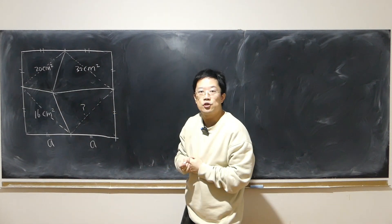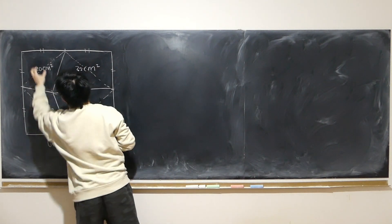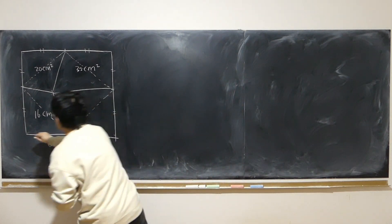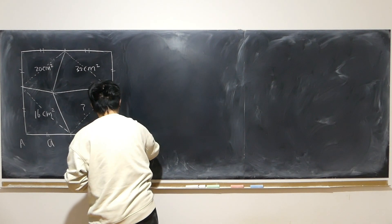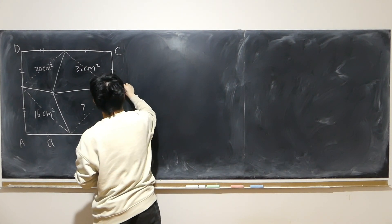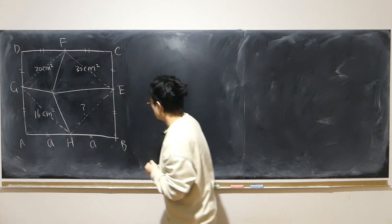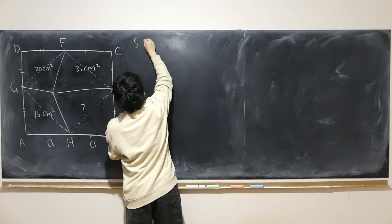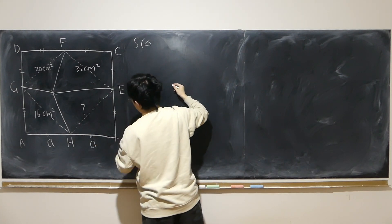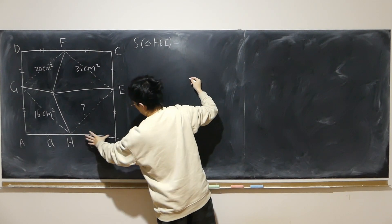The area of each small triangle — this small triangle, which is the same as this small triangle, this small triangle, and this small triangle — they should all be equal to each other. The area of triangle H-B-E equals half of A times A, that is half A squared. All such small triangles are the same.